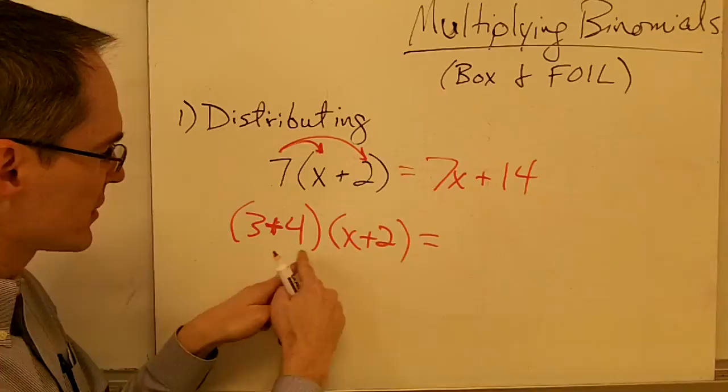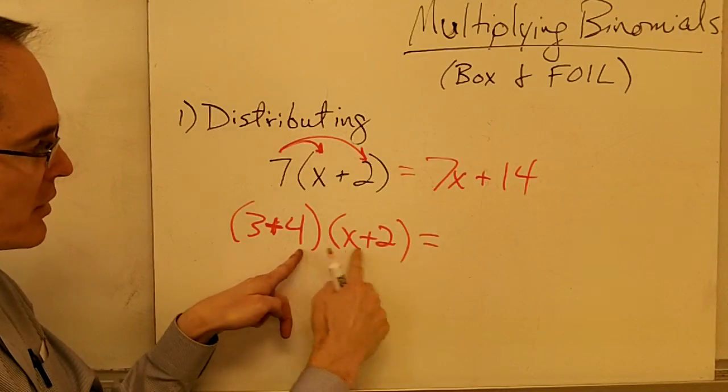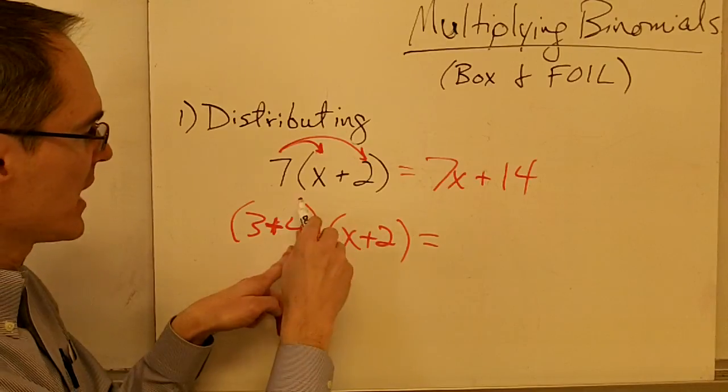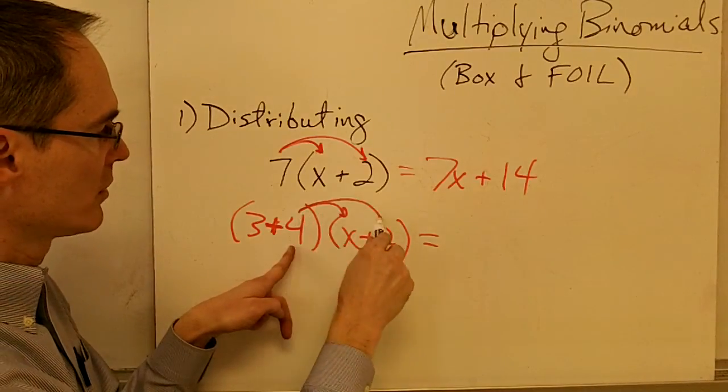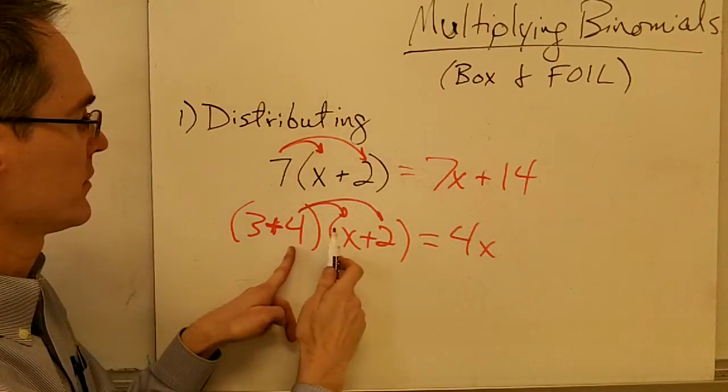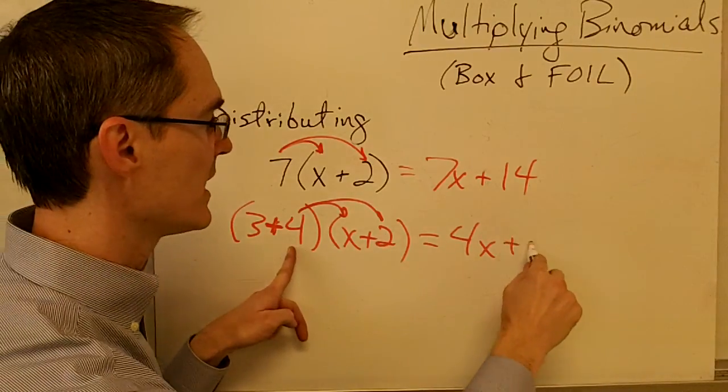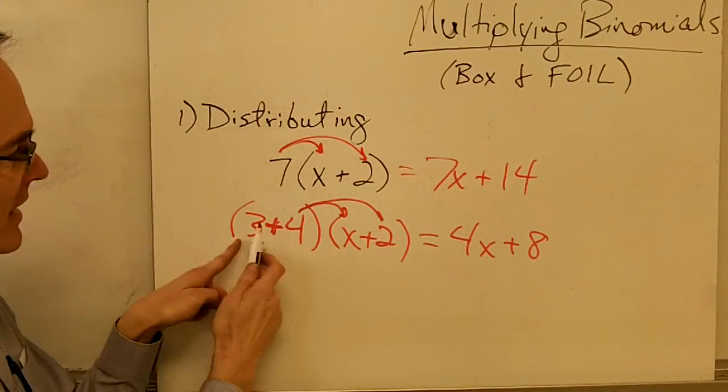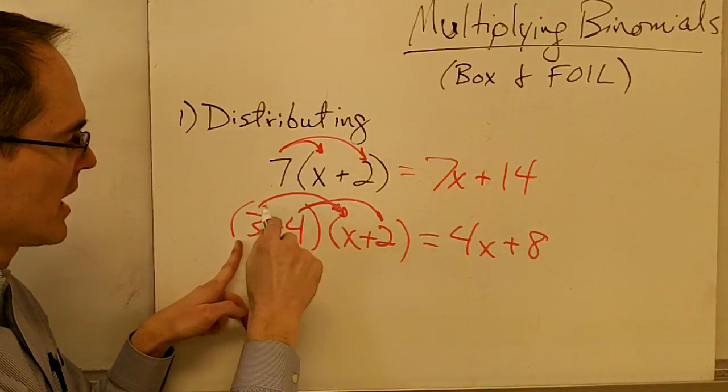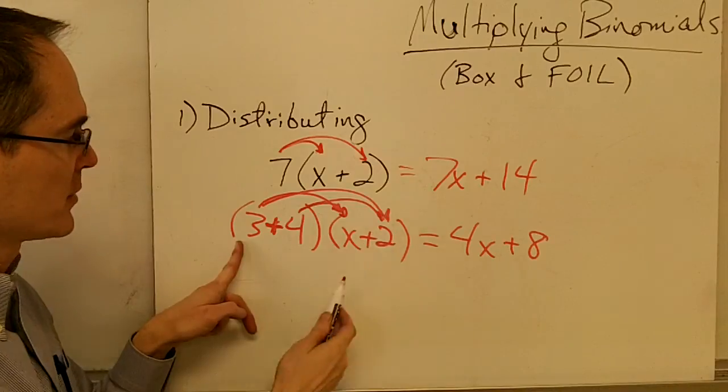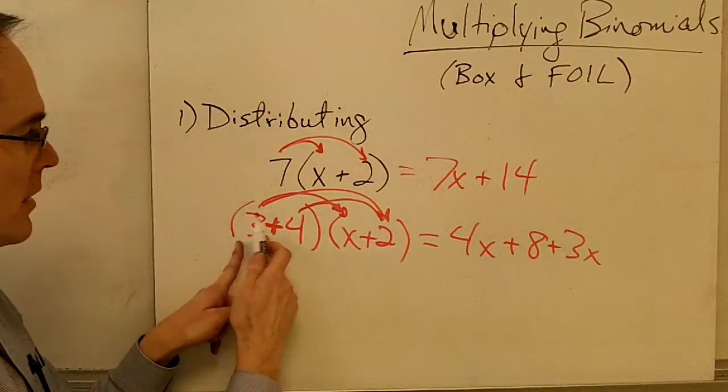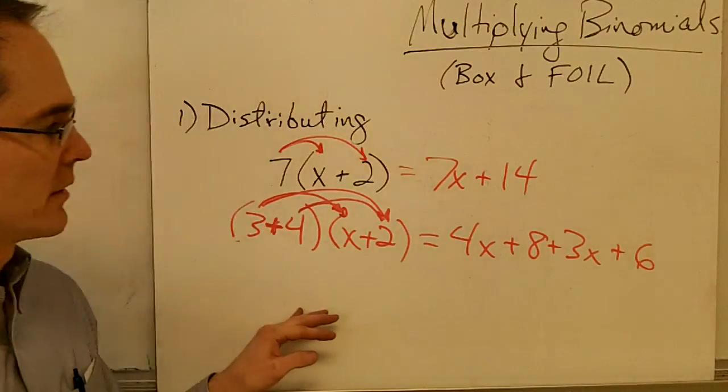Well, so what I'm going to do is I'm just going to kind of do them in order. First, let me do 4 times x and 4 times 2. So I'll give me 4x, and 4 times 2 is 8. Then I need to do the same thing with my 3. That is, I need to say 3 times x and 3 times 2. So 3 times x is 3x, and 3 times 2 is 6.